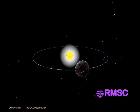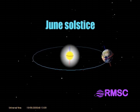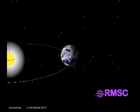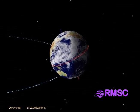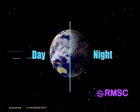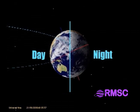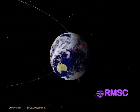Now we let three months go by. Earth's North Pole always points toward the North Star. At the June solstice, we stop time again and look closer at Earth. In June, Earth's Northern Hemisphere gets much more sunlight than the Southern Hemisphere, so it's summer in the north and winter in the south.